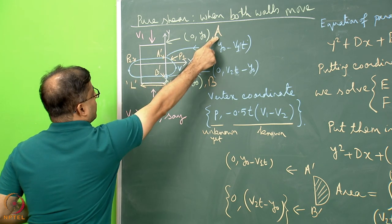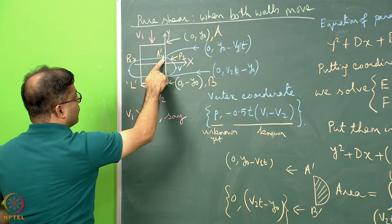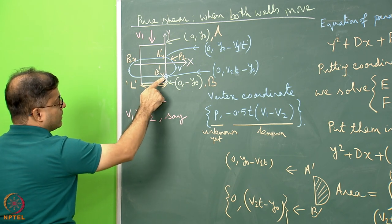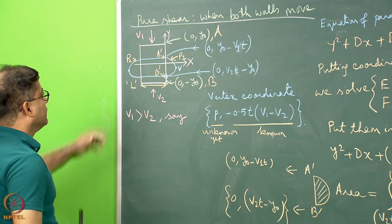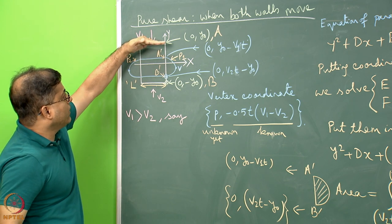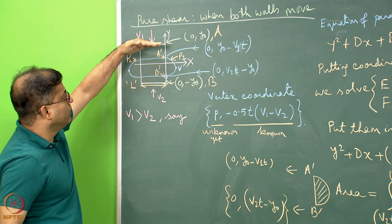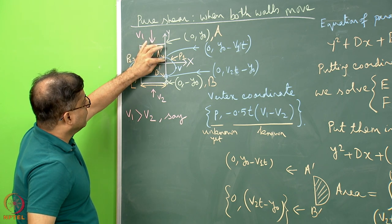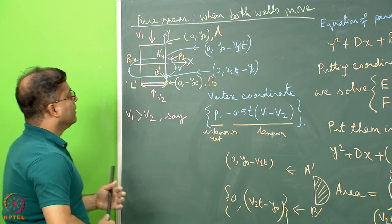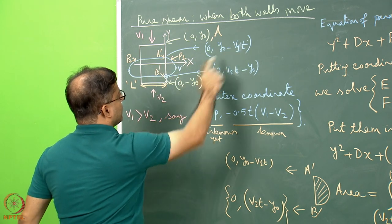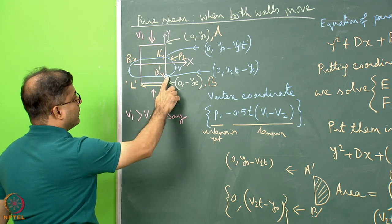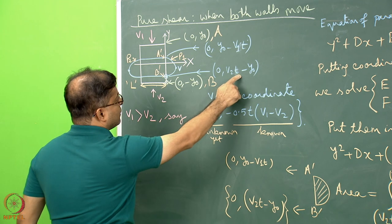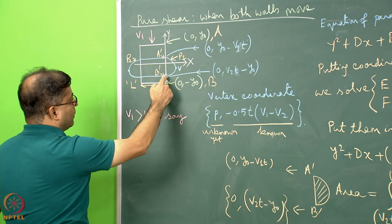Because of this movement, point A comes at time t to position A', and point B comes at time t to position B'. Since velocity is v₁, the total distance travelled by the top boundary will be v₁·t. Therefore this length will now be y₀ − v₁·t, so the coordinate of A' will be (0, y₀ − v₁·t). Similarly, the coordinate of B' will be (0, v₂·t − y₀). Now we can think of a parabolic profile developed here.